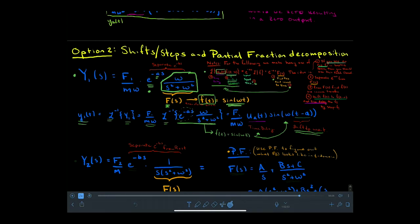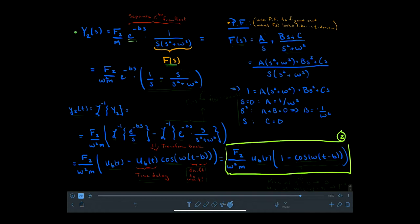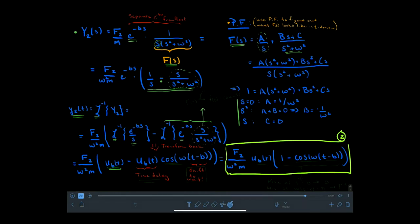For the second term — the response to the step function — we again bring the exponential out front. The remaining capital F(s) is almost the same as before, but now has an extra 1/s in the denominator. That means F(s) needs to be broken down with partial fraction decomposition, stripping off the 1/s term and leaving s/(s² + ω²) for the sinusoidal part. Applying partial fractions and equating like coefficients, F(s) breaks down into 1/s minus s/(s² + ω²).